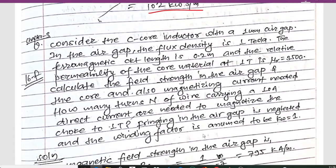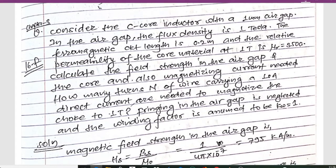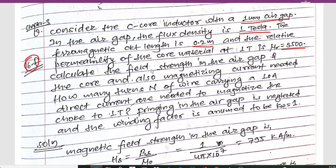Now we have another important numerical from Chapter 3 on the design of magnetic circuits, asked in the 2016 exam. Consider a C-core inductor with a 1 mm air gap where the flux density is 1 Tesla, the ferromagnetic circuit length is 0.2 meters, and the relative permeability of the core material at 1 T is μr = 3500. Calculate the field strength in the air gap and core, the magnetizing current needed, and the number of turns of wire carrying 10 A DC needed to magnetize the choke to 1 Tesla.